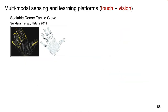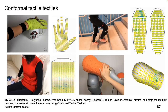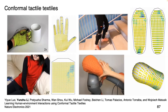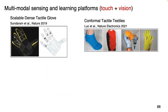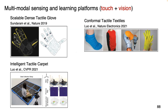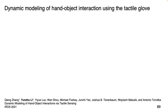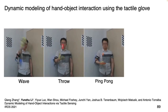Besides the tactile glove, we have developed conformal tactile textiles published in Nature Electronics, available as gloves, socks, vests, and robot sleeves, capturing tactile information for human-environment, human-robot, and robot-environment interactions. We have also developed a tactile carpet to understand physical interactions between humans and the environment. We have used the tactile glove to model the dynamics of hand-object interactions, especially in highly dynamic tasks like waving, throwing objects up and down, playing ping pong, and balancing an umbrella.